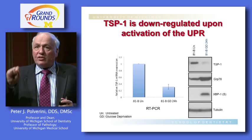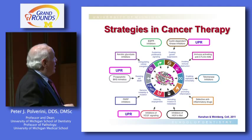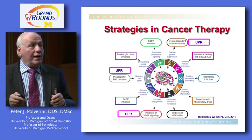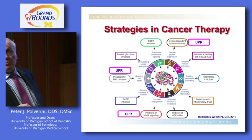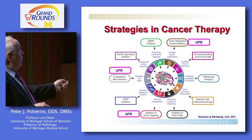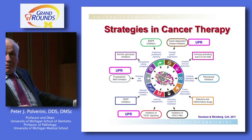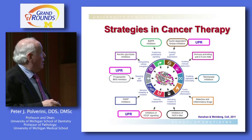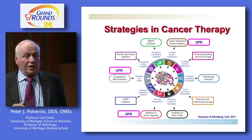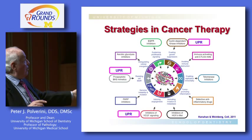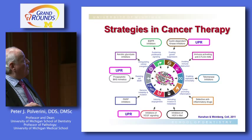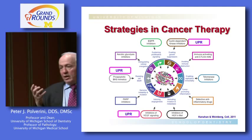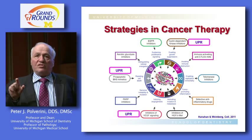Looking at an expanded version of the Hanahan and Weinberg diagram, these represent potential targets. The unfolded protein response fits in multiple ways: it is important in resisting cell death, so targeting it may reverse susceptibility to death stimuli; it directly stimulates vascular endothelial growth factor production; and it can have a direct effect on cell proliferation. In theory, we have a pathway that allows us to look at three independent processes all involved in sustaining tumor growth.